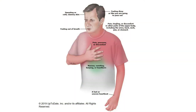Signs of angina are similar but milder to those of a heart attack. You may have pressure, pain, or tightness in your chest or shoulder. You may also experience pain or tingling in your jaw, upper back, and arms, especially the left arm. Shortness of breath, sweating, and nausea may also occur.